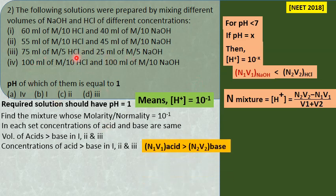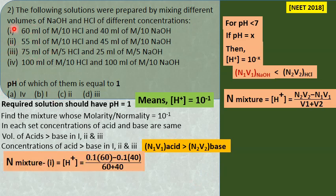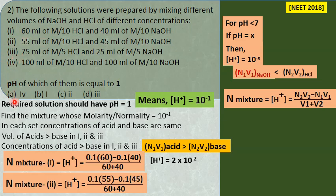Let us try combinations one by one. For the first: concentration 0.1 × 60 minus 0.1 × 40, divided by total volume. On simplification, H⁺ = 2×10⁻², which is not equal to 10⁻¹, so first is ruled out. For the second, H⁺ ion becomes 1×10⁻², also ruled out.